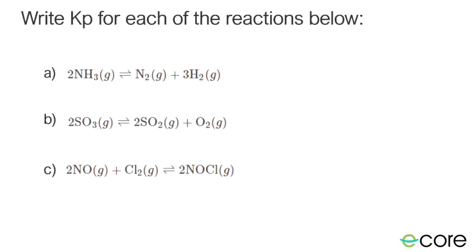So here we're going to write Kp for each of the reactions below. It's a good idea here for you to just pause and go ahead and give it a try on your own. Okay, so let's go ahead and write them. We'll see if you got them right. Kp is equal to, we write the pressures up top. So we have PN2 raised to the first power. And then we have PH2 raised to the third power. On the bottom, we get PNH3, because that's our reactant, and it's raised to the second power. So there we go for the first one.